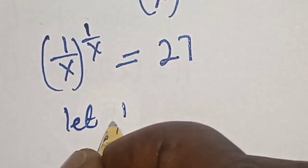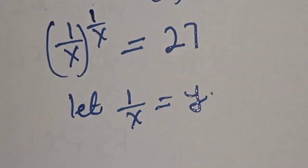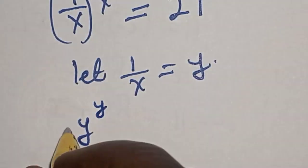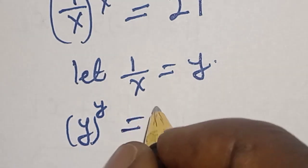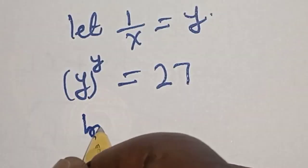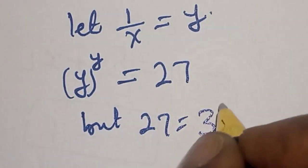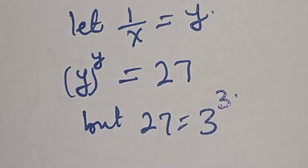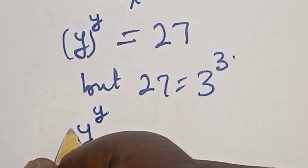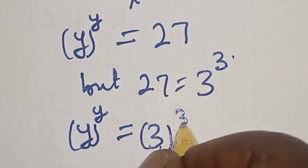Let 1 divided by x equal y. Now we have y raised to power y is equal to 27. But 27 is equal to 3 raised to power 3. So y raised to power y is equal to 3 raised to power 3.